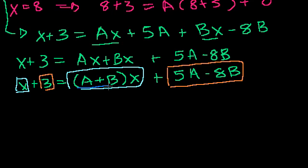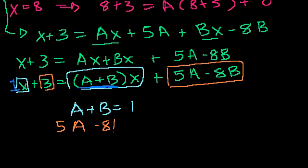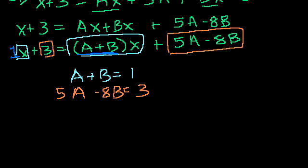You use that insight to essentially set up a system of equations. So you say, a plus b, that's the coefficient on the x term on this side. Well, that has to be equal to the coefficient on the x term on that side. And the coefficient on the x term right here is 1. It's not written, but it's implicitly 1 times x. So a plus b have to equal 1. And then the constant terms have to add up to 3. So 5a minus 8b equals 3. Then you have a system of two equations, two unknowns.